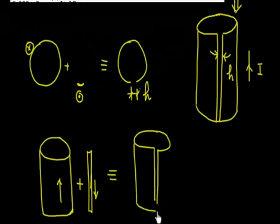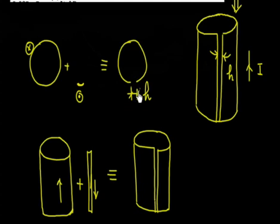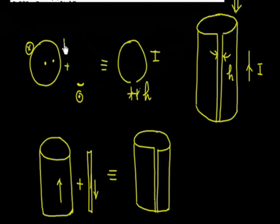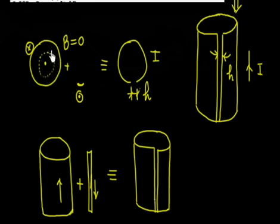Now if you add these two systems, there will be a space where there is no current — you will get the original system. For any point inside the cylinder, the magnetic field B1 is zero. If you apply Ampere's loop law and make an Ampere loop inside, the current enclosed is zero. So the magnetic field inside at any point due to the full cylinder is zero.